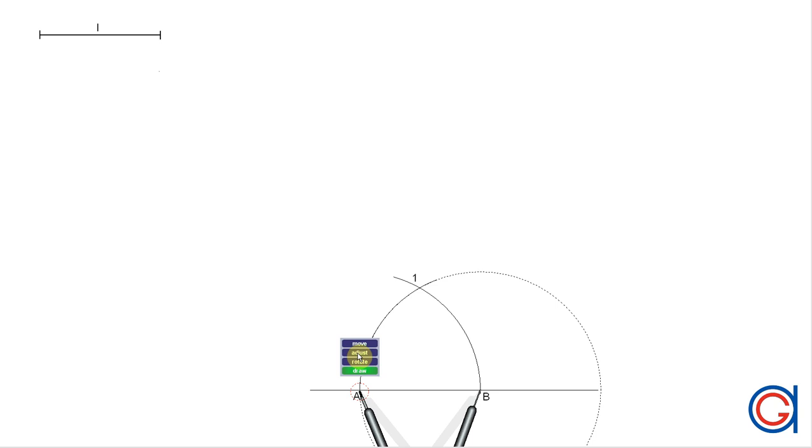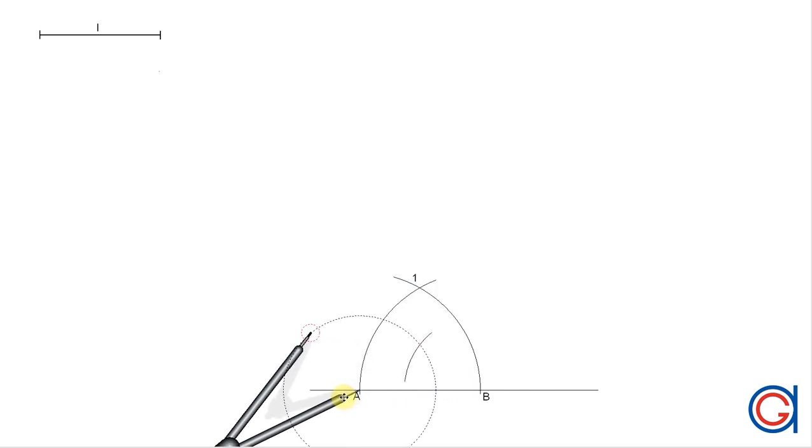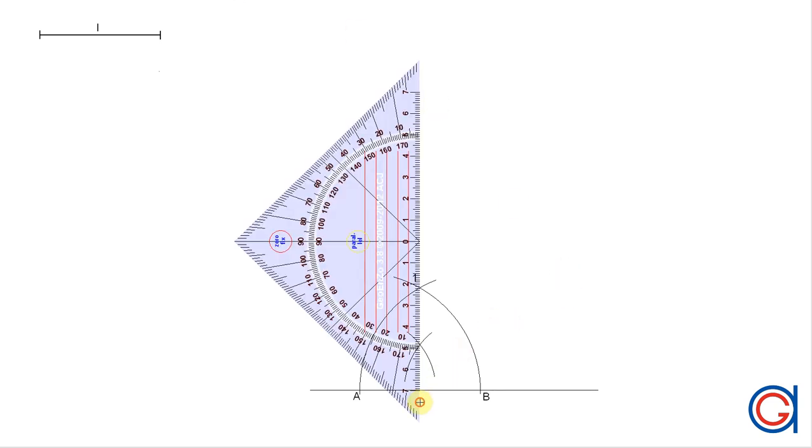So the next step is to draw the perpendicular bisector of the side AB. We set our compass to a length slightly more than half and we scribe two arcs as can be seen here. And now we scribe our second arc cutting the previously drawn arc. Now we draw a vertical line through the two previously drawn intersecting arcs as shown here.